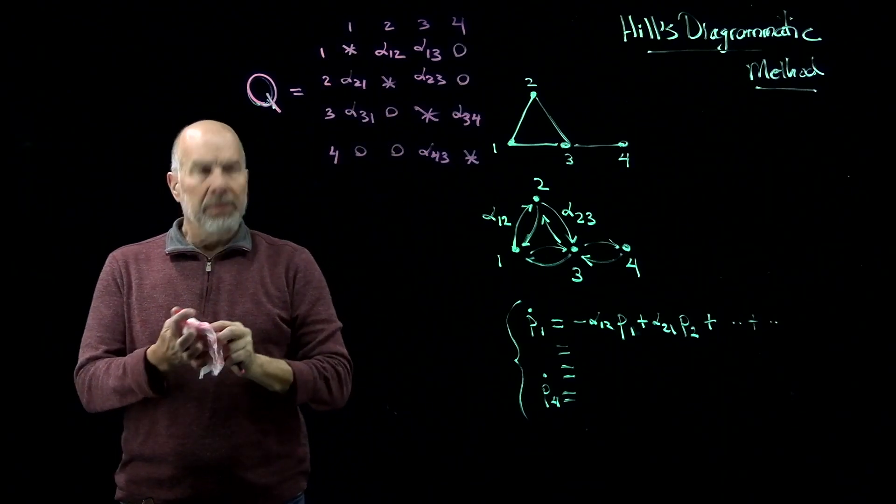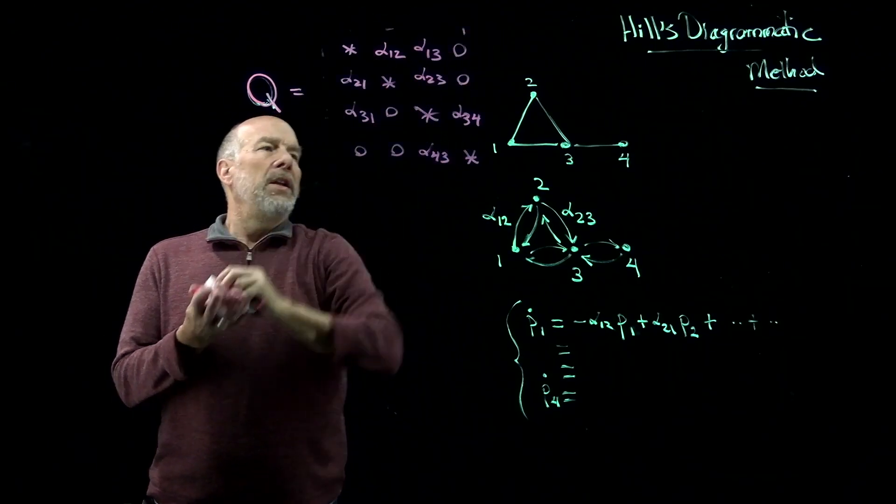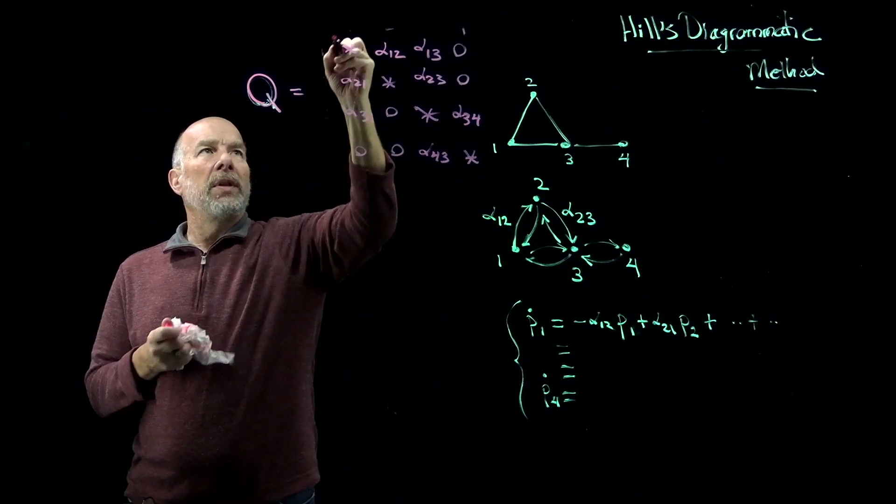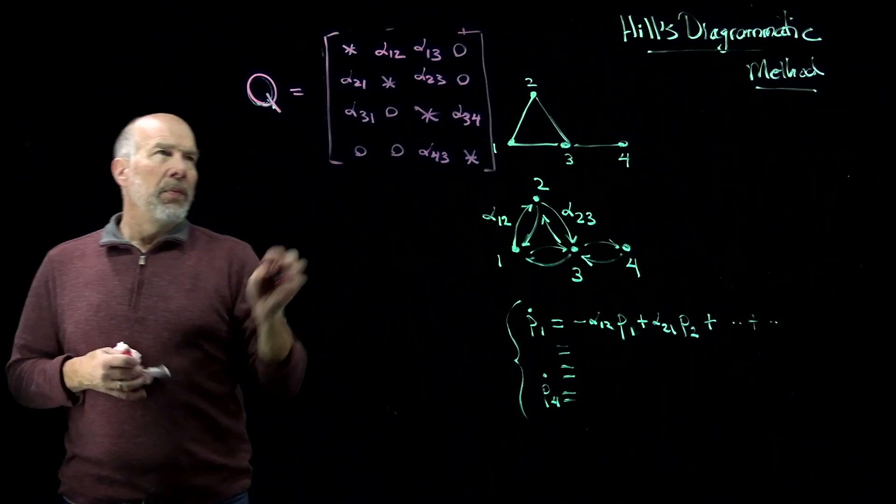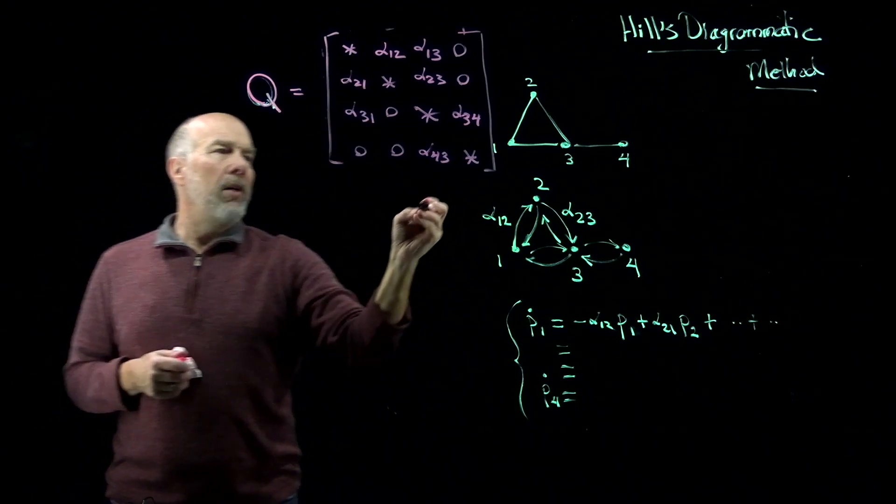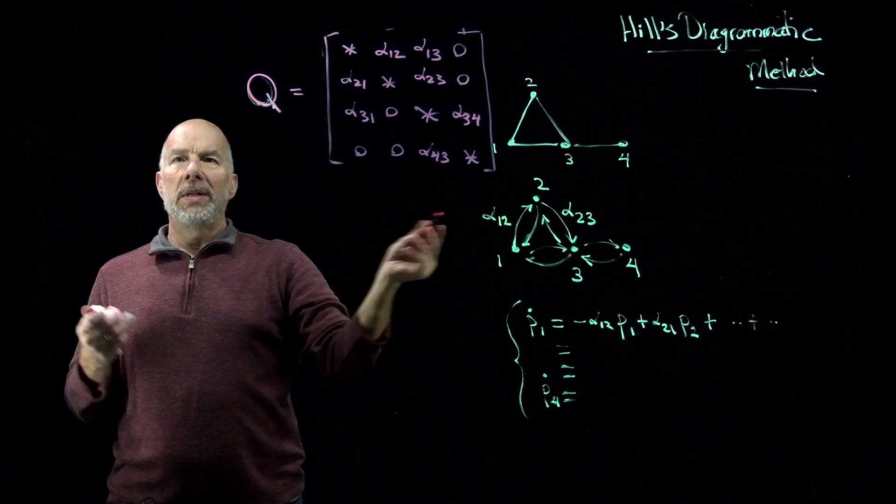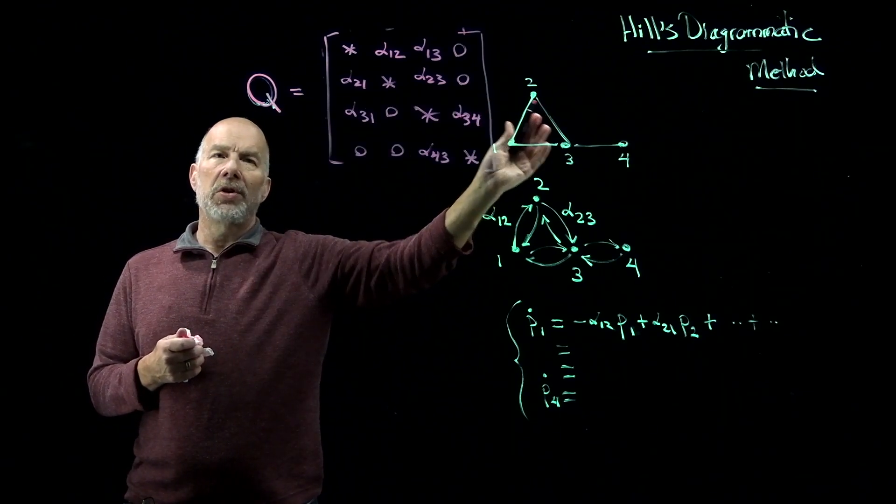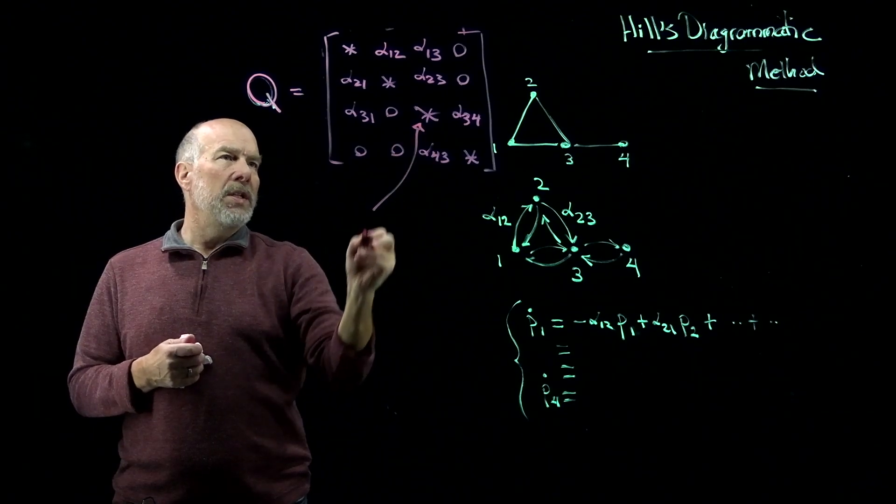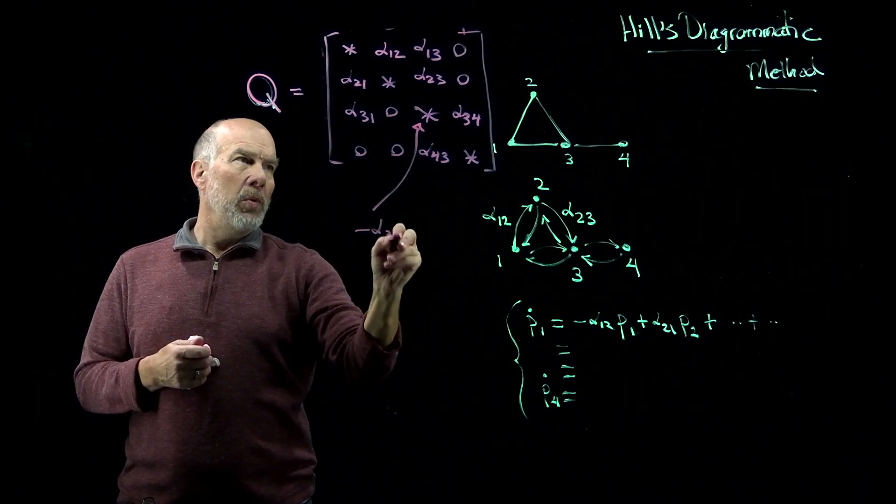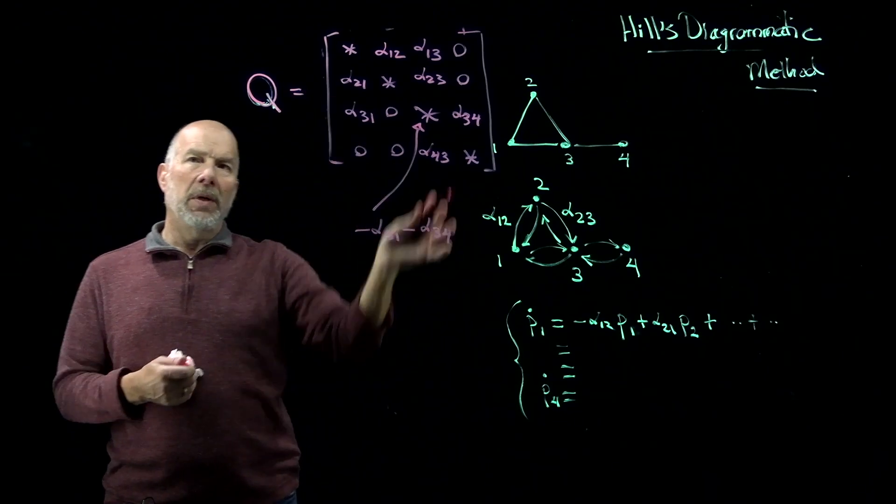Now we'll remove these indices here and just make it clear that we're thinking of this as a 4 by 4 matrix. Now, the meaning of the stars is that in this particular element, each star is whatever value you would need to make the sum in this direction equal to 0. For example, this star is equal to minus 3,1, minus alpha 3,4, and so on.